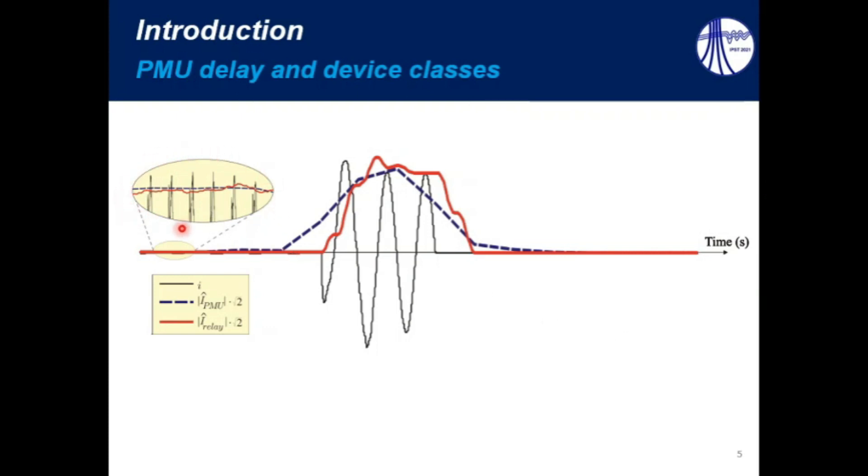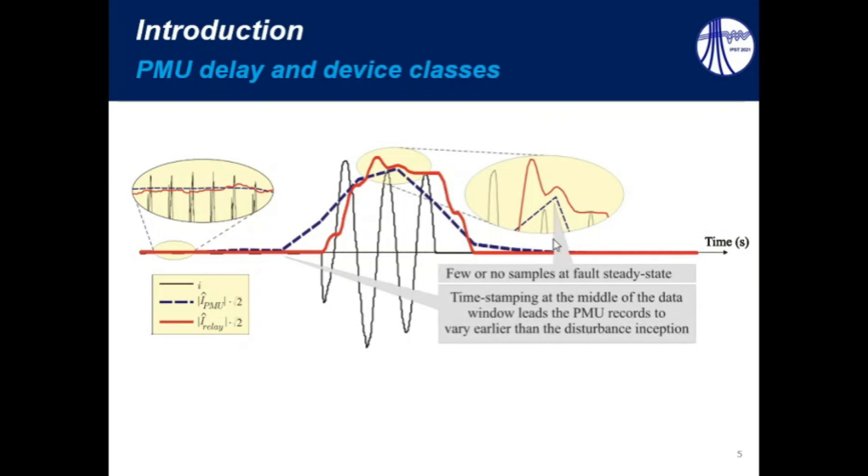we can see that the phasor estimation estimated by the PMU is more stable, but when we consider the fault period, we can see that the relay algorithm allows you to have more samples during the fault period, whereas the PMU estimation only reaches the steady state fault period here, and then it goes to the third period, which would be like a post-fault period. So, we can see that fewer samples can take place at the fault steady state, if we consider the PMU estimation, and we can see also that the timestamps are used at the middle of the data window, leading the PMU records to vary earlier than the disturbance inception.